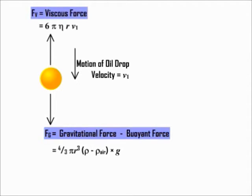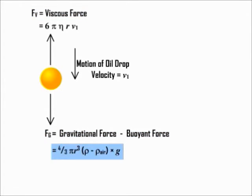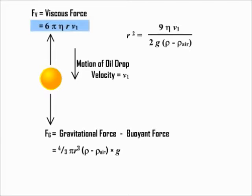So these two forces are equal to each other. That is 4/3 π r³ (ρ - ρ_air) g = 6πηrv1, or r² = 9ηv1 / [2g(ρ - ρ_air)]. Thus r is calculated if v1 is known, and accordingly Fg can be calculated from this equation.